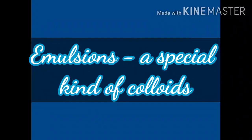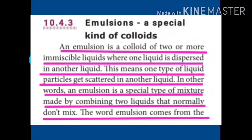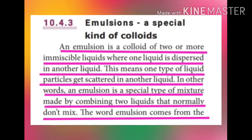Next topic: emulsions are a special kind of colloid. An emulsion is a colloid of two or more immiscible liquids where one liquid is dispersed in another. This means one type of liquid particles get scattered in another liquid. An emulsion is a special type of mixture made by combining two liquids that normally don't mix.